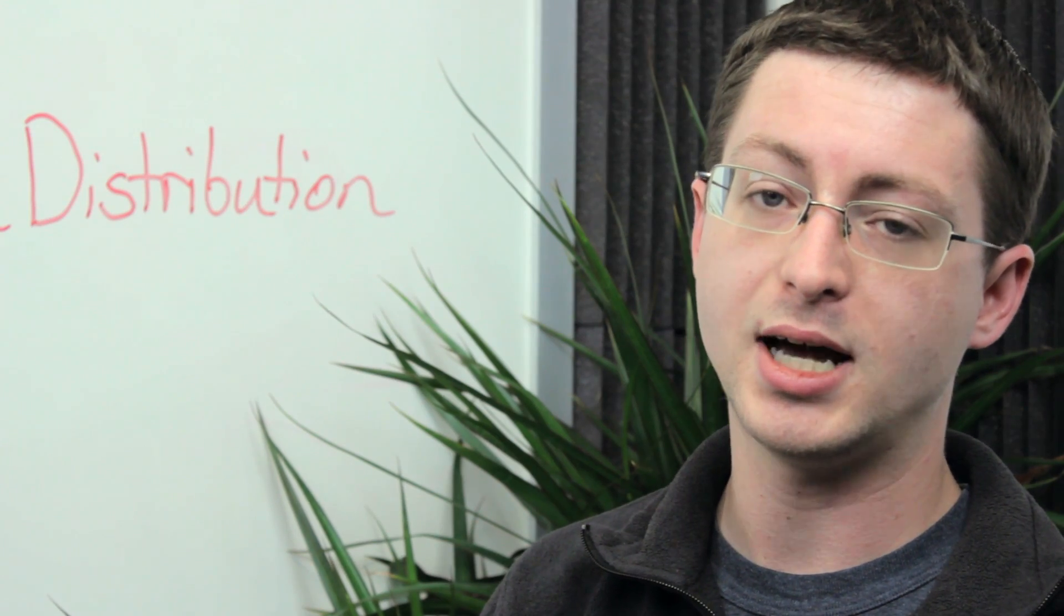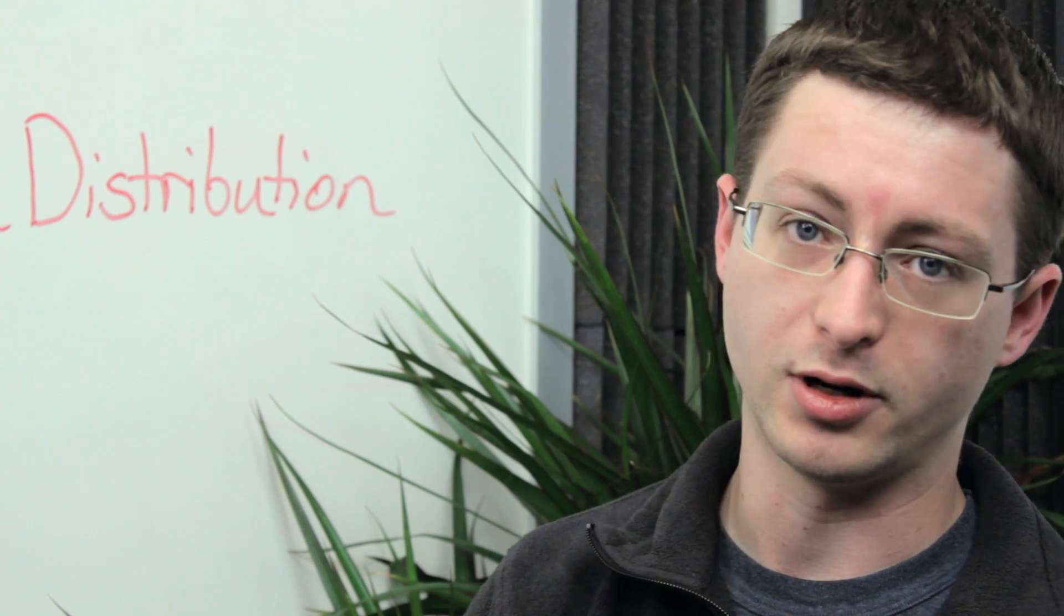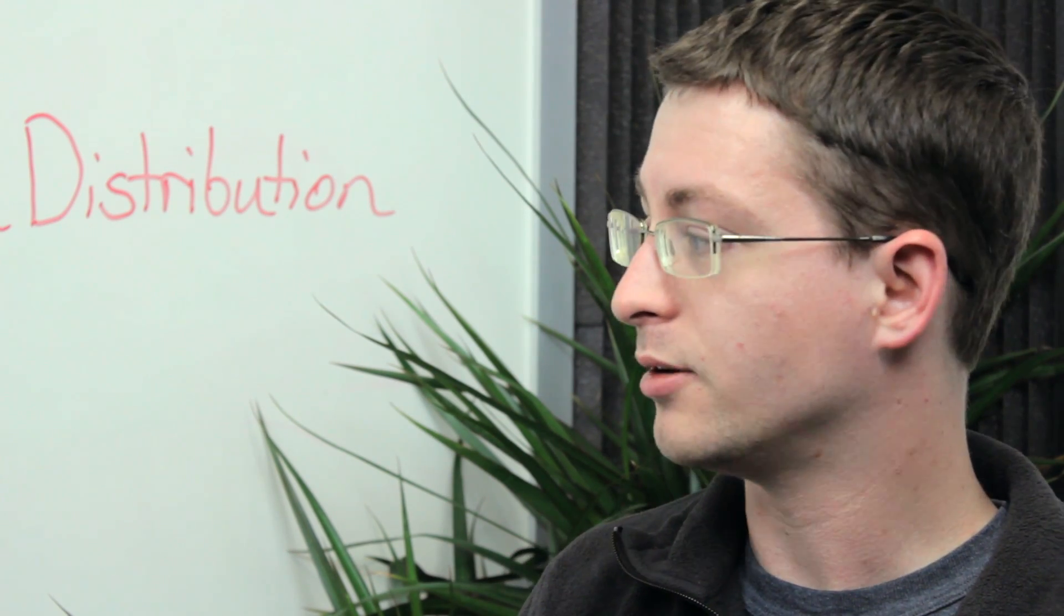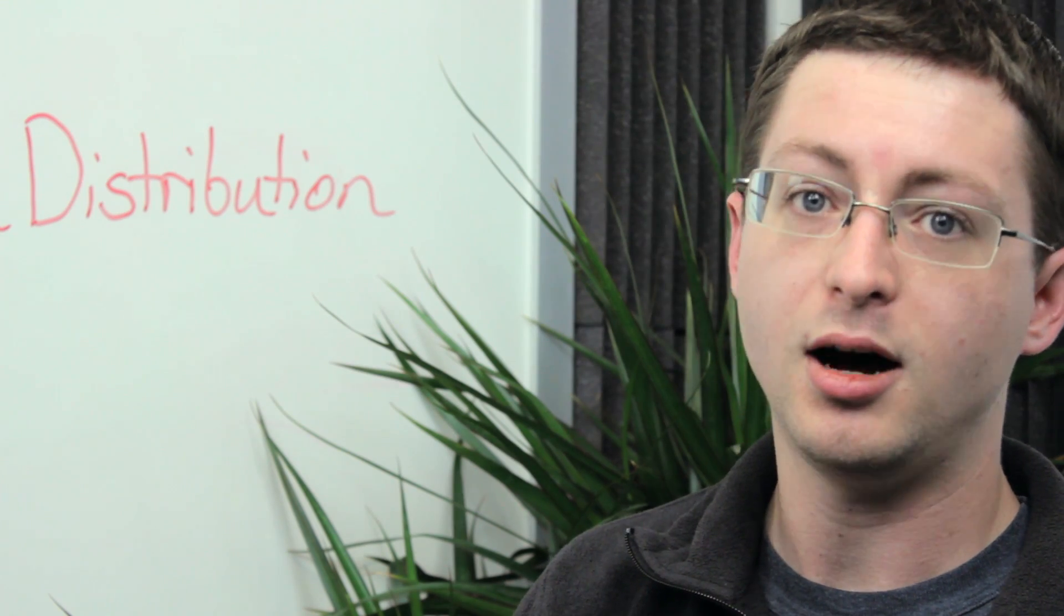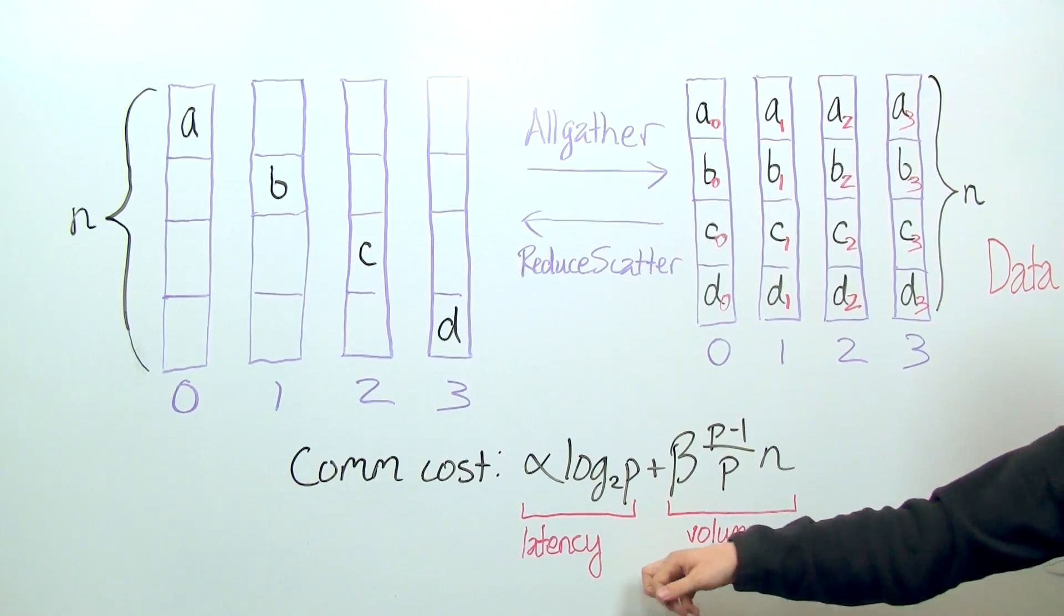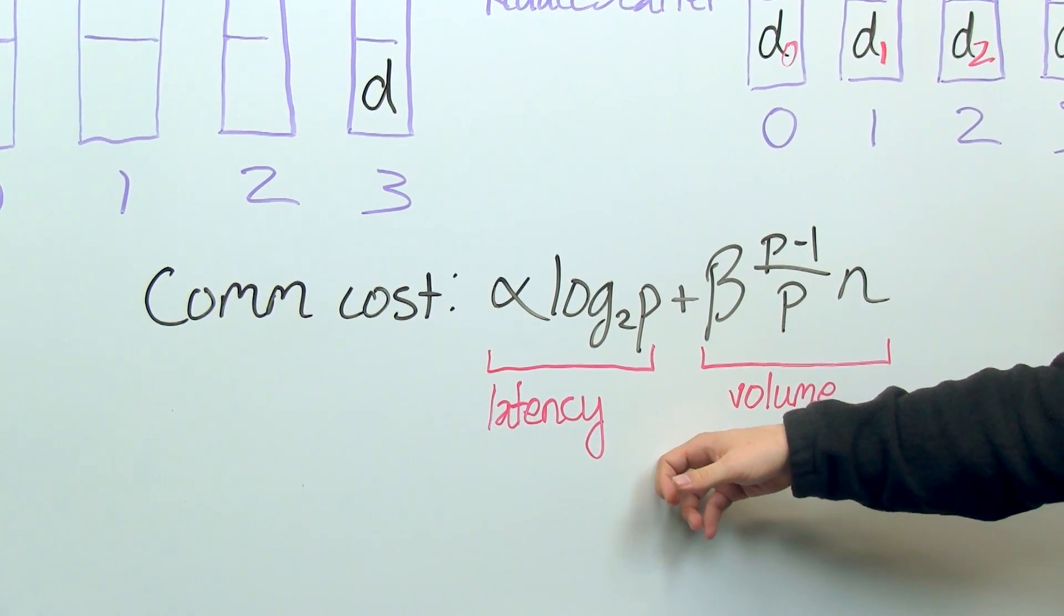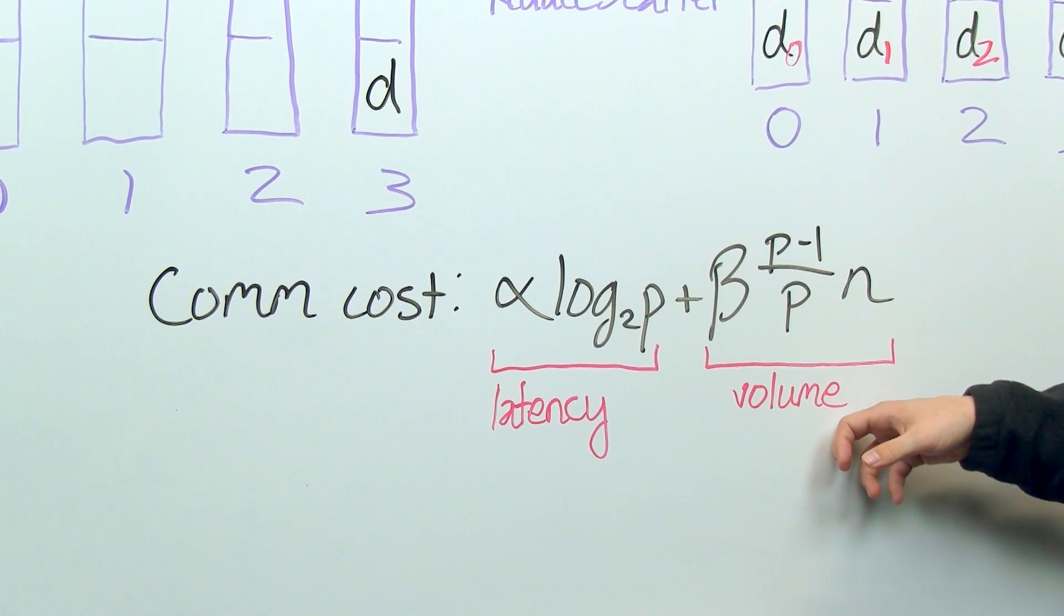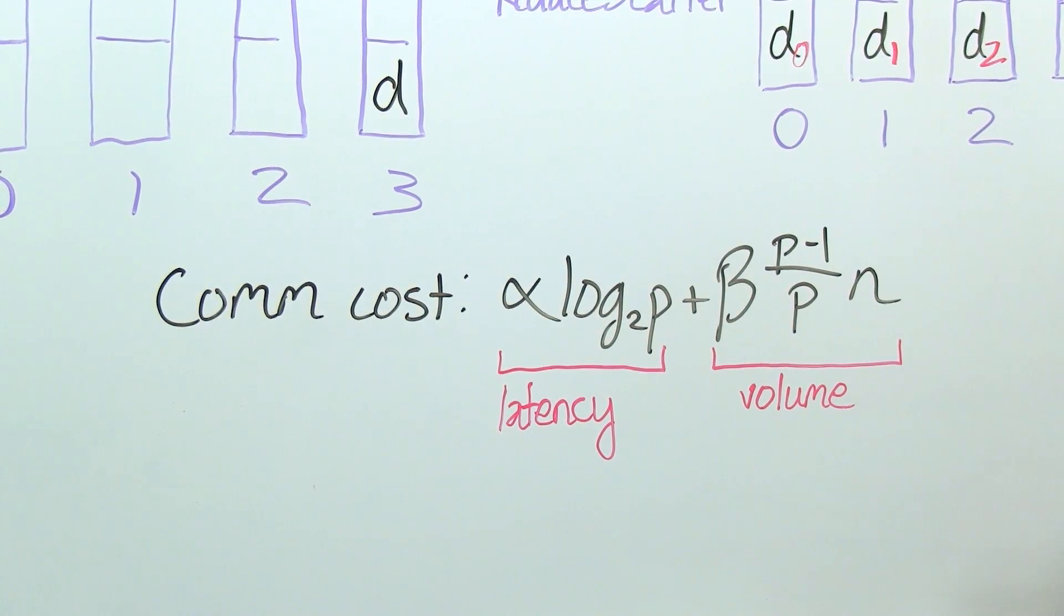What's important is that it's the exact same communication steps as in allgather, essentially run in reverse. For both of these algorithms, if we go through the alpha plus beta n cost model, we'll see that the latency cost can be as low as alpha times log base 2 of P if there are P processes. Then the volume cost will look roughly like beta times n if the total length of this vector is n.